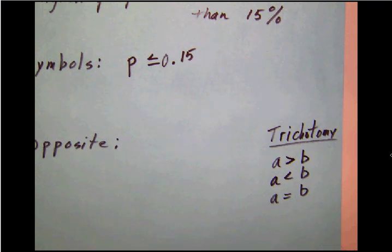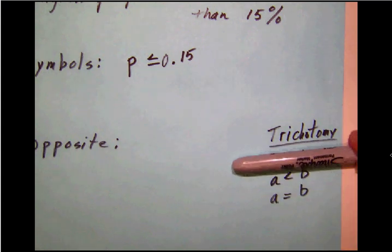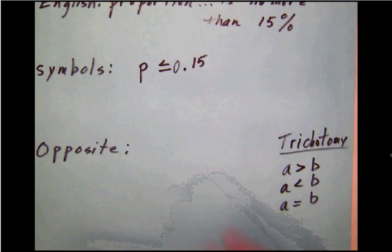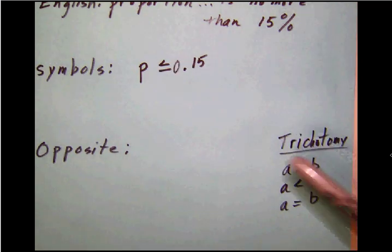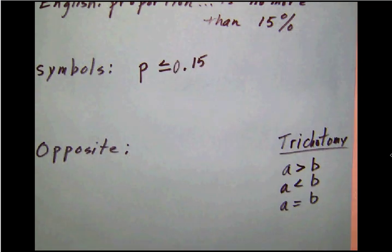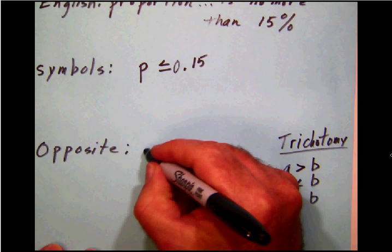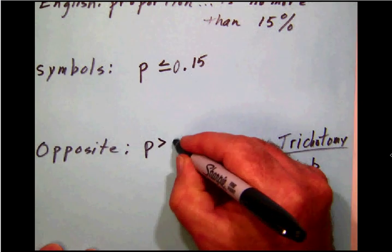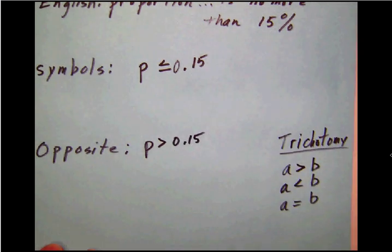So if we have a situation where a is not greater than b, so if we take that out, we can see that it has to be less than or equal to. And likewise, in our situation over here, if it's not less than and it's not equal to, then it's opposite. It's the only choice that's left then is greater than. So we're going to have p is greater than 0.15 for its opposite.